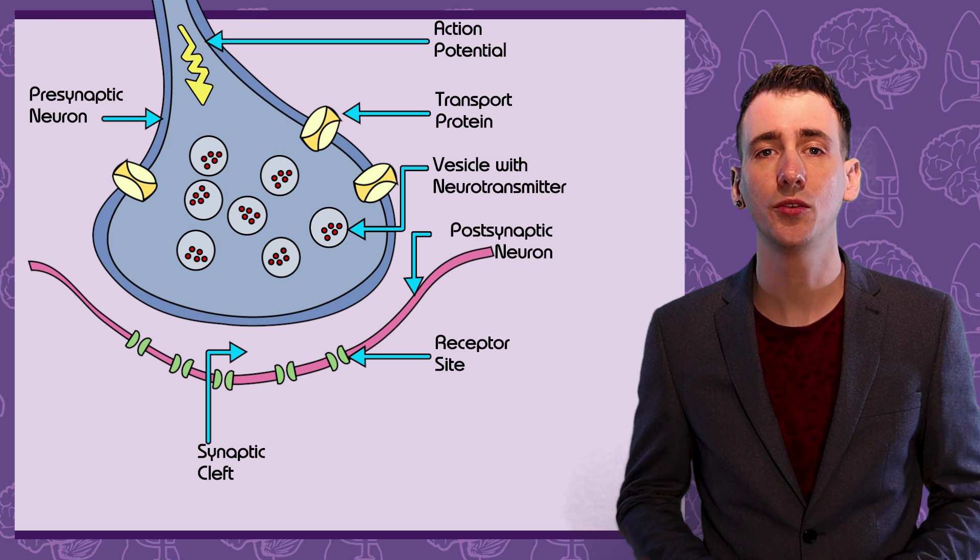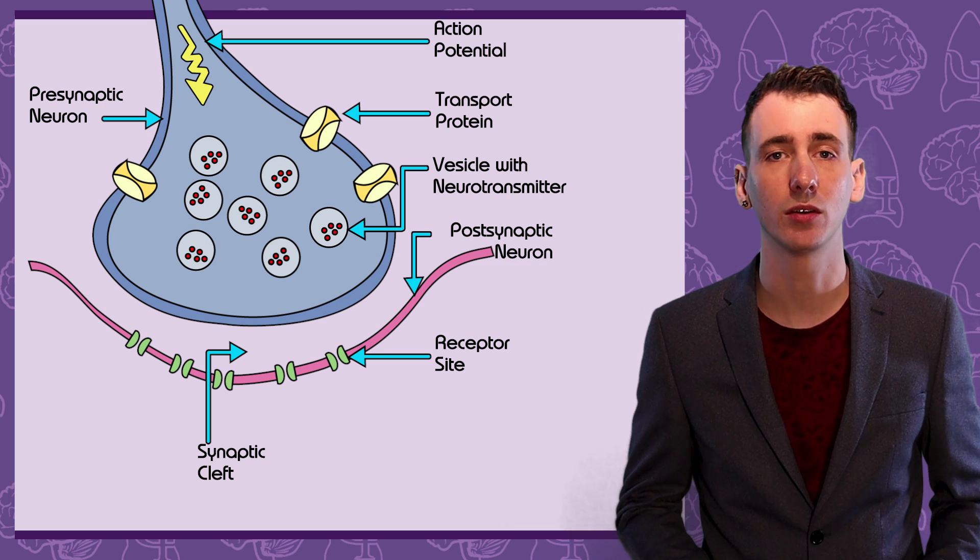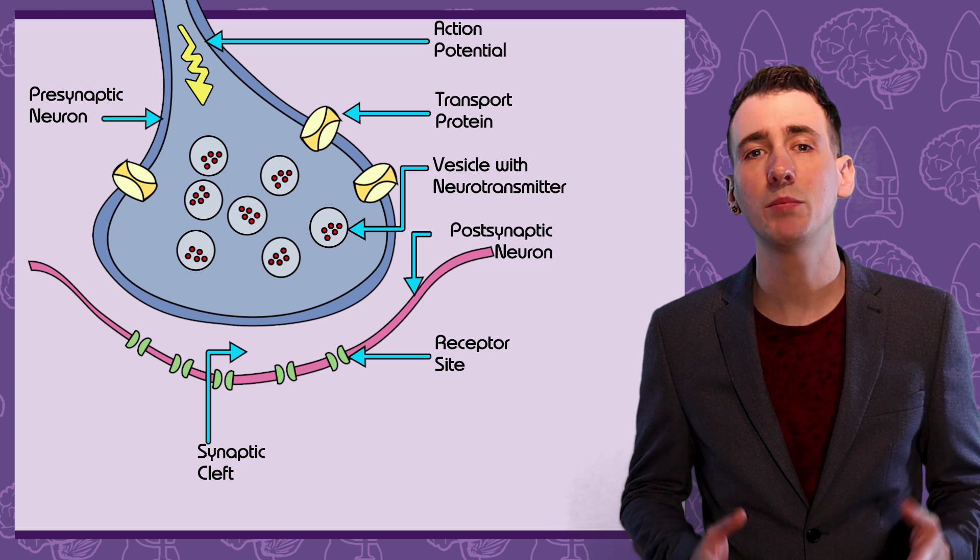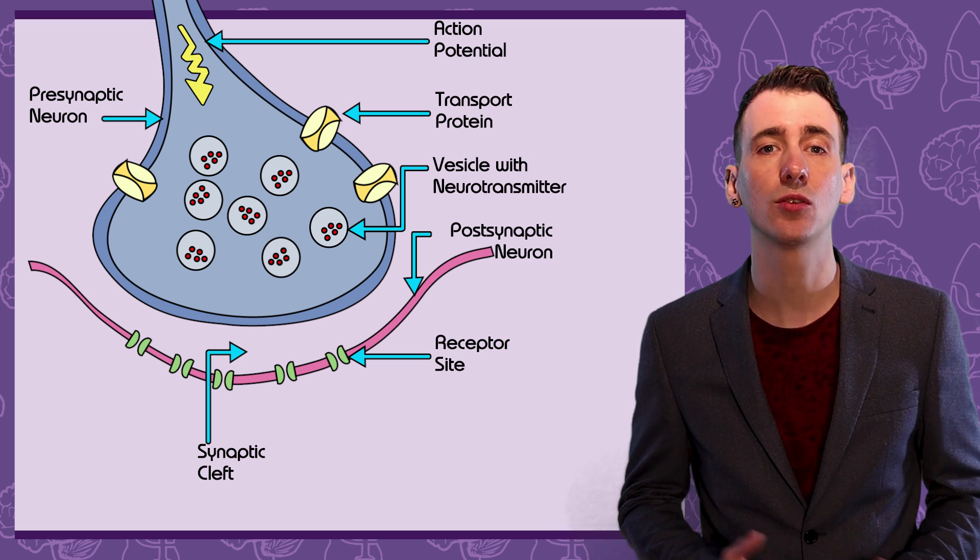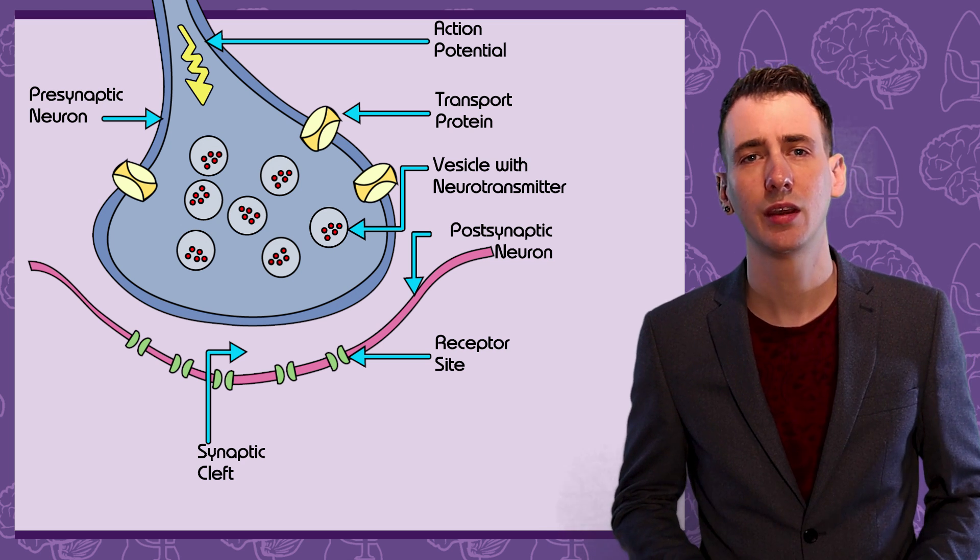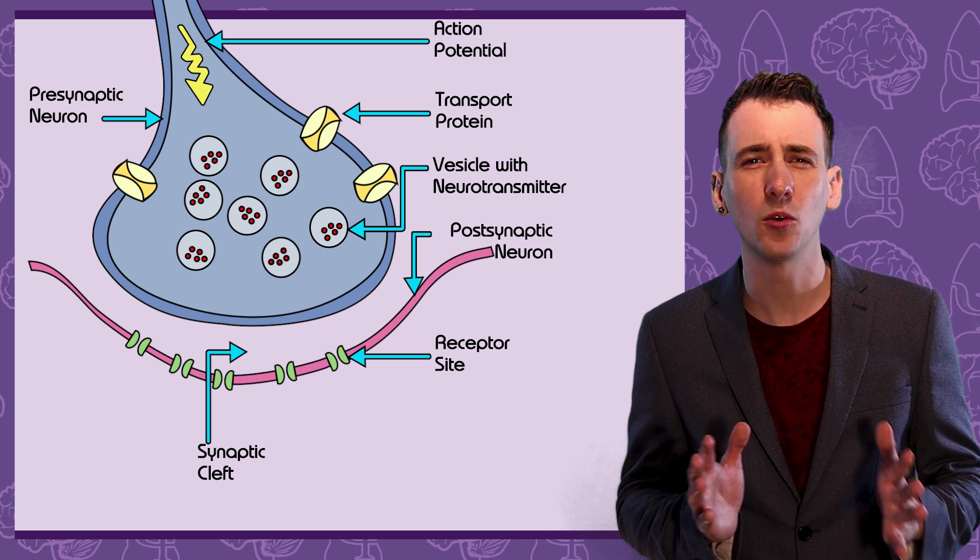Inside the axon terminal are vesicles. These contain the neurotransmitter chemicals. The gap between the blue and the pink neurons is called the synaptic cleft. This gap is tiny, about 20 to 40 nanometers.